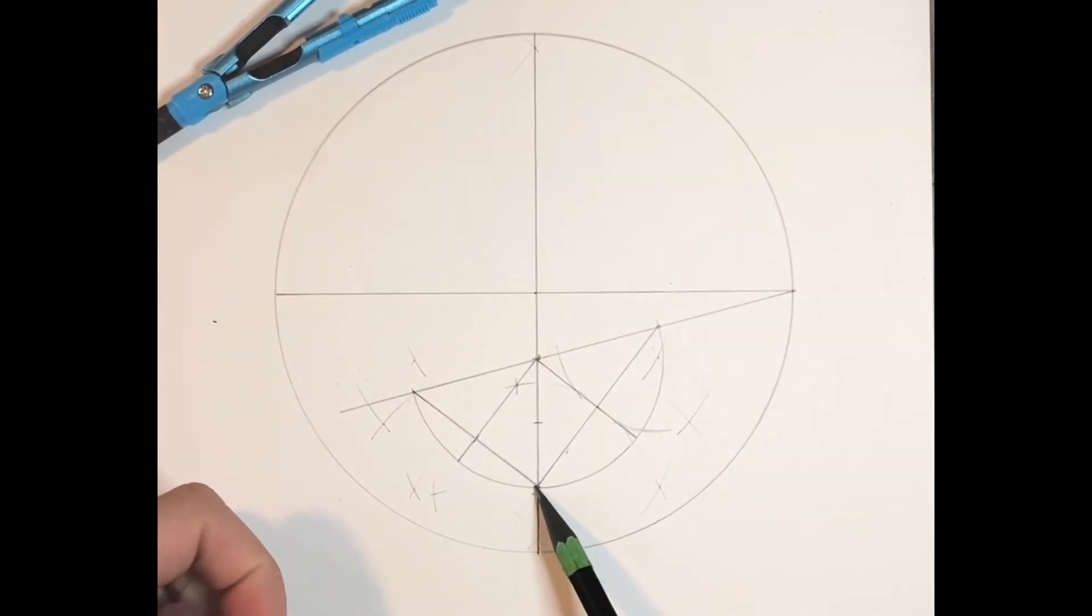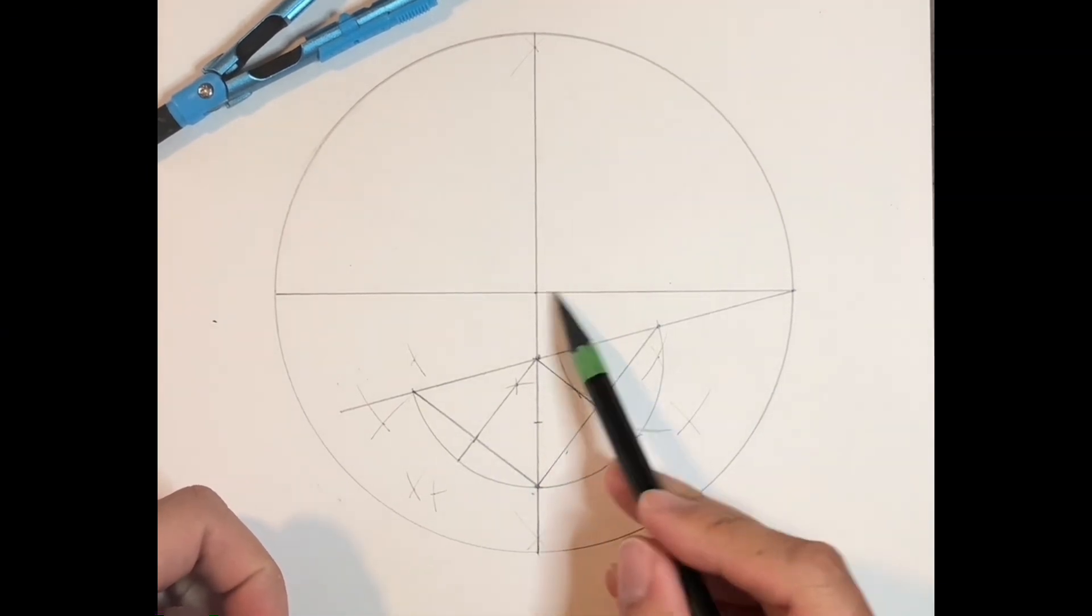Then we're going to draw a line from here to here and a line from here to here and divide them. Then draw a line from here to here. Then we have two points.